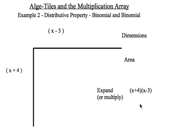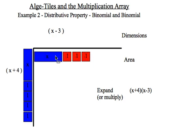In this example I'd like to multiply x plus 4 times x minus 3. This is a little different because this will be our first negative involved. So I'll set up x plus 4 along the left hand side, and x minus 3 along the top.